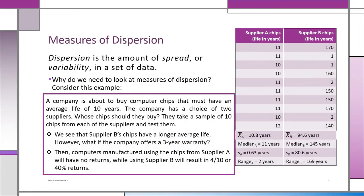Why do we need to look at measures of dispersion? Maybe the mean is enough. This example will show you why you want measures of dispersion. You're a company and you want to buy computer chips with an average life of at least 10 years. You have a choice of two suppliers — supplier A and supplier B.